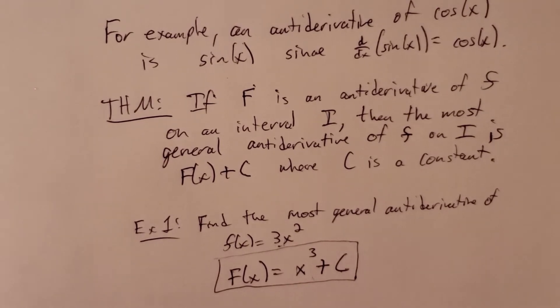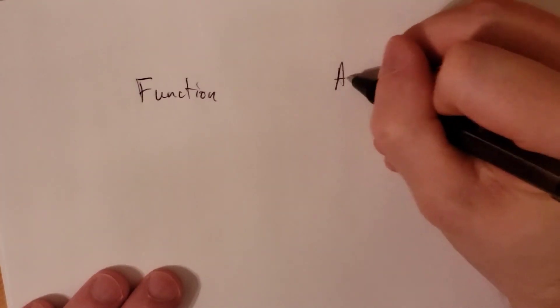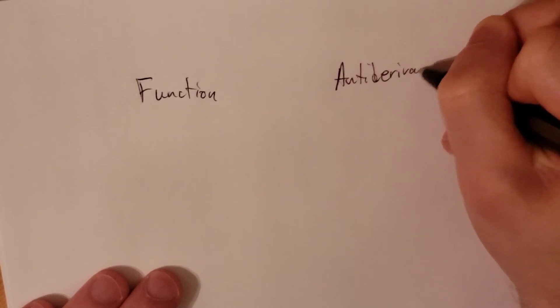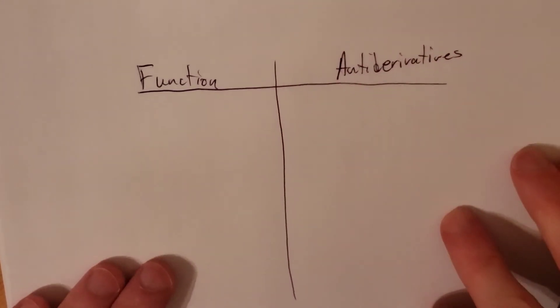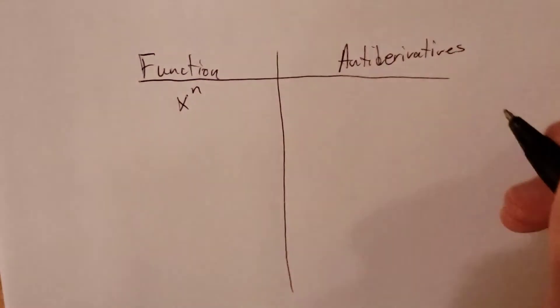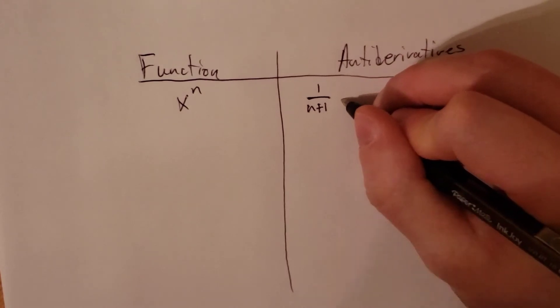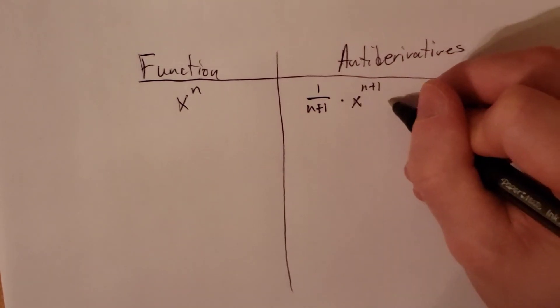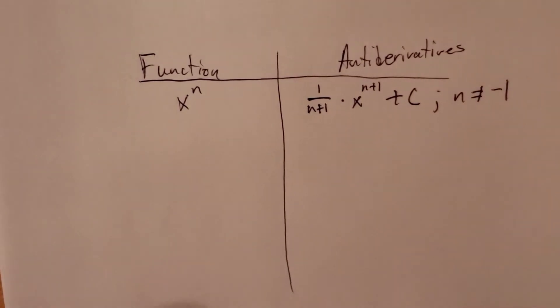Let's talk about a few general antiderivative rules. For the function x to the n, our general antiderivative rule is 1 over n plus 1 times x to the n plus 1, plus some constant c, as long as n does not equal negative 1.